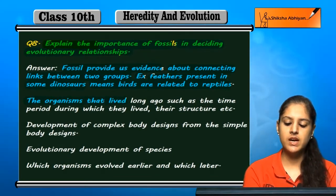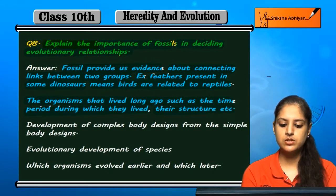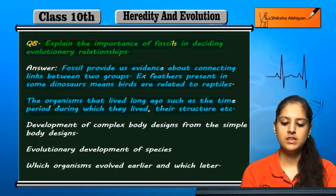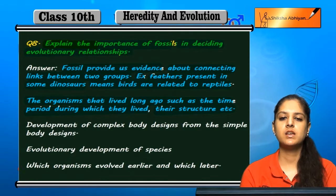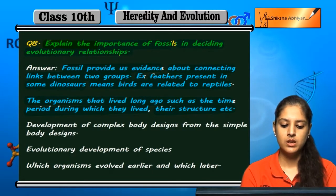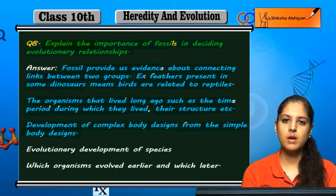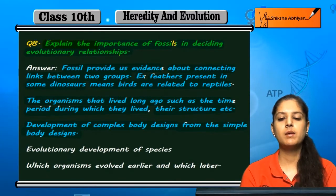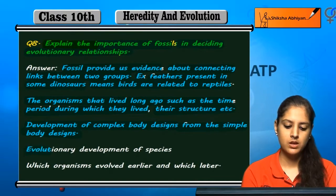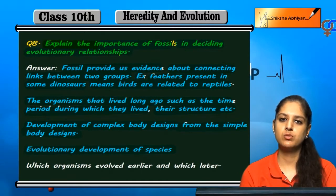The organisms that lived long ago — such as the time period during which they lived, their structure, etc. — tell us what evolution is happening. The development of complex body designs from simple body designs is also revealed. We know that complex body designs are developed from simple body designs, and we can understand the evolutionary development of species.